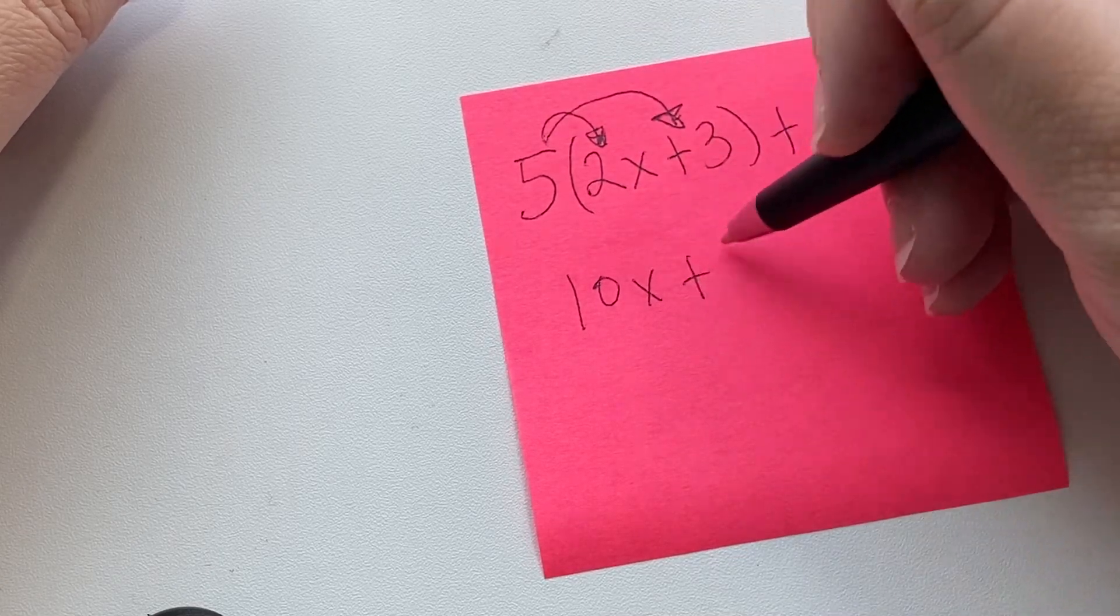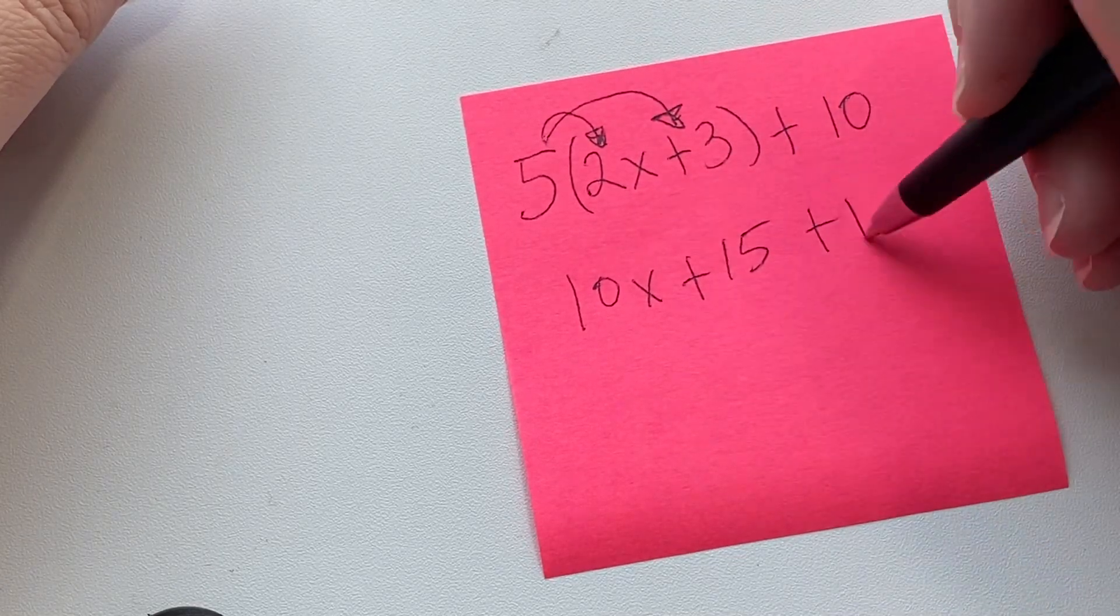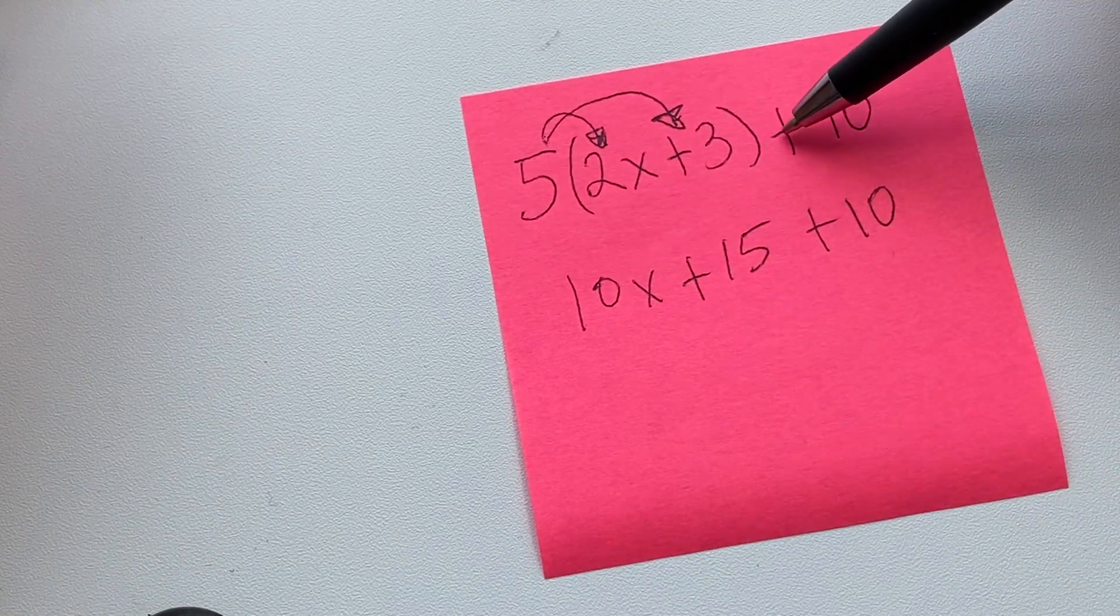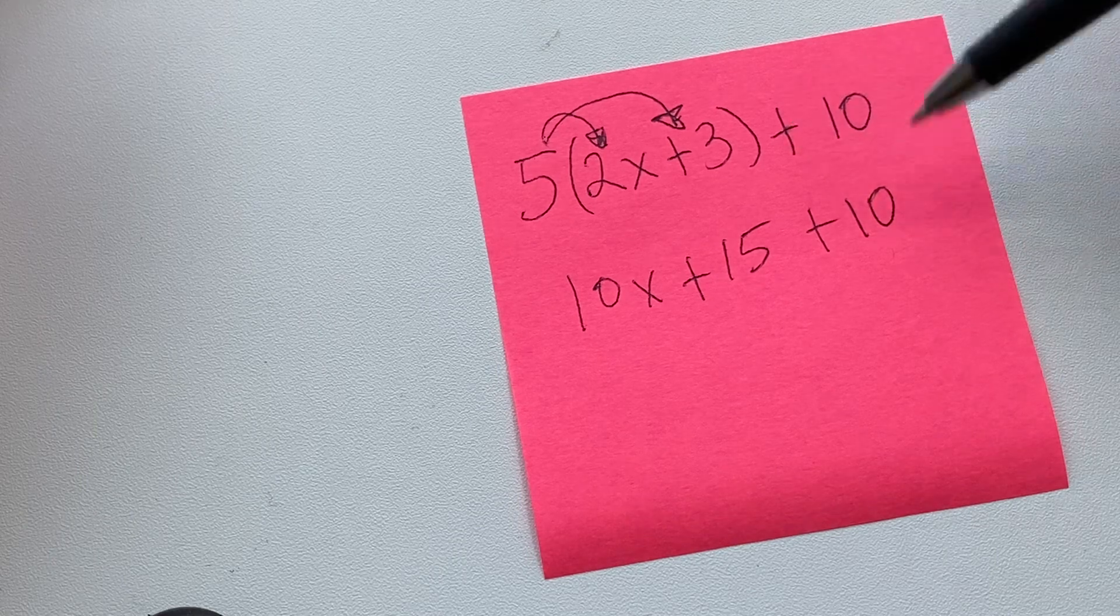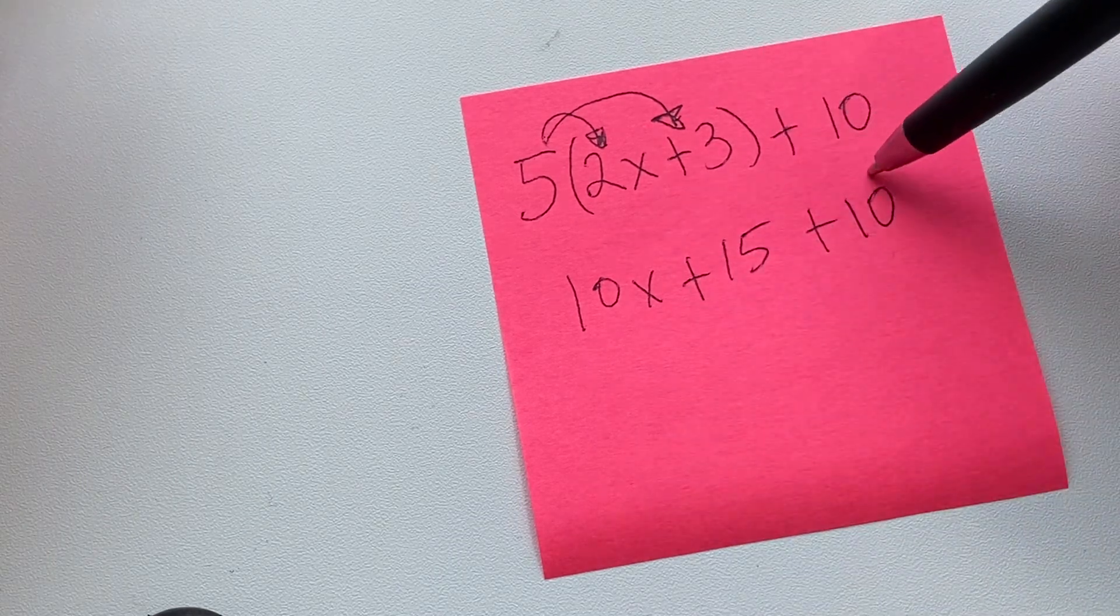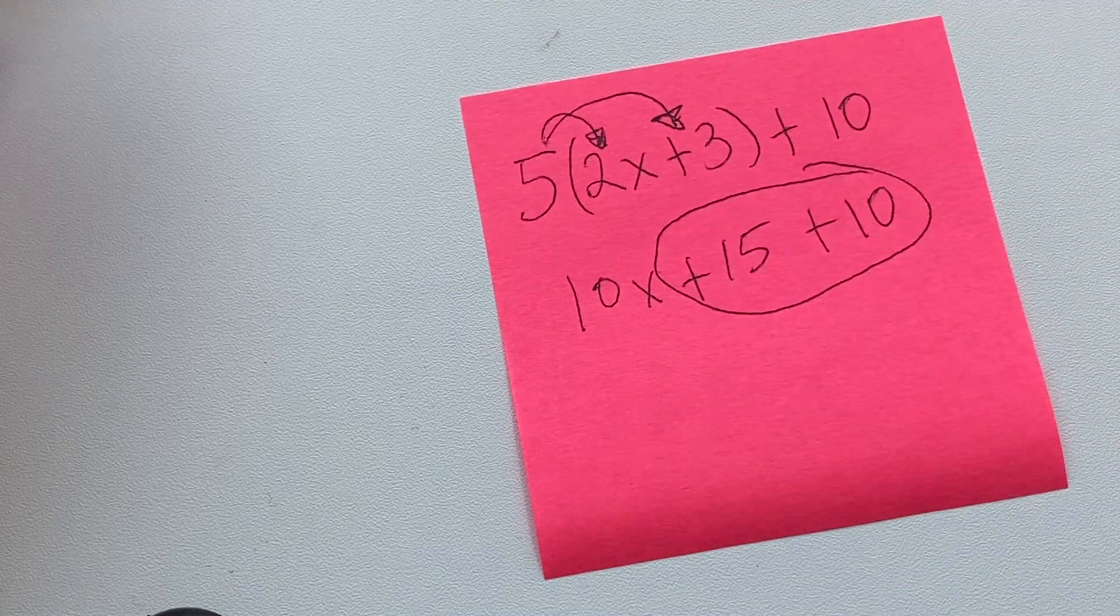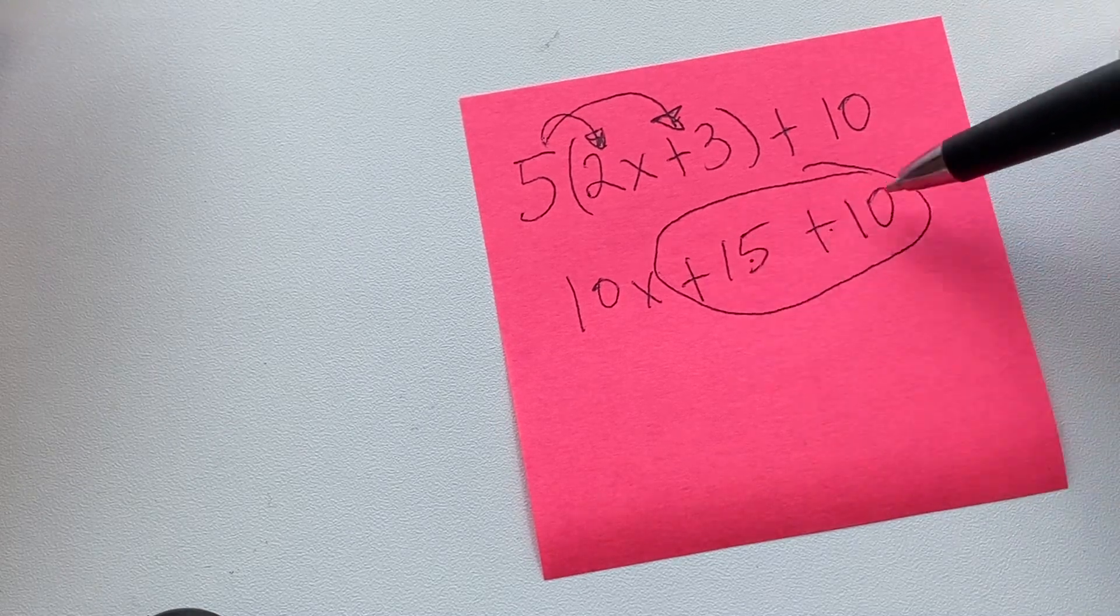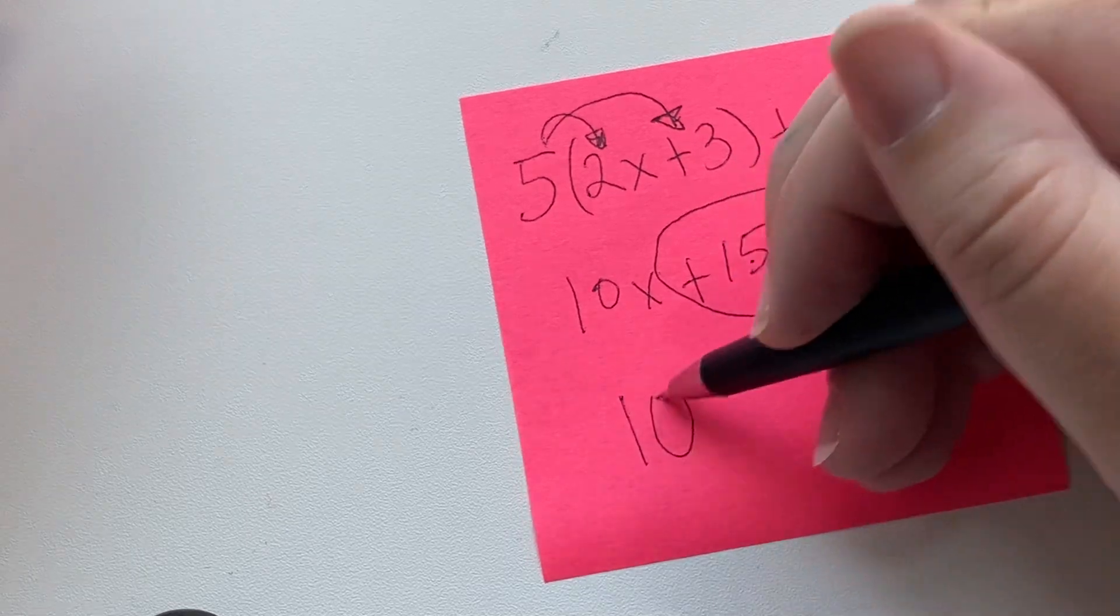This will be 15. We keep our plus 10 because it is not related to the parentheses. It's separated with this plus. Then these two are the like terms, so this will be 15 plus 10, so we have our 10x